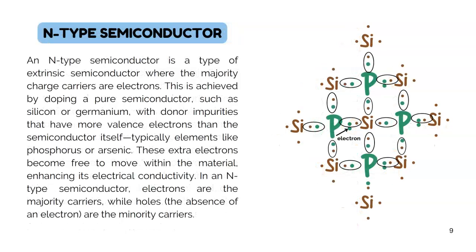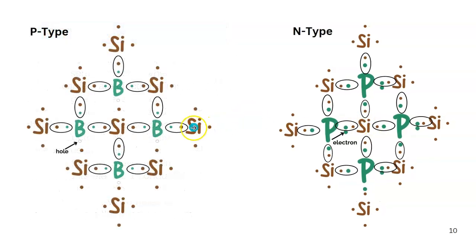In N-type semiconductors, pure silicon is doped with a pentavalent impurity such as phosphorus. Phosphorus has 5 electrons in its outermost shell, and silicon has 4. The 4 electrons of silicon participate in covalent bonding with 4 electrons of phosphorus, and we are left with 1 electron that has no other electron to pair with. Hence it is free to move within the material. By doping pure silicon with phosphorus, we create excess electrons — these free electrons become majority carriers, while holes are minority carriers. In P-type semiconductors, holes are majority carriers.